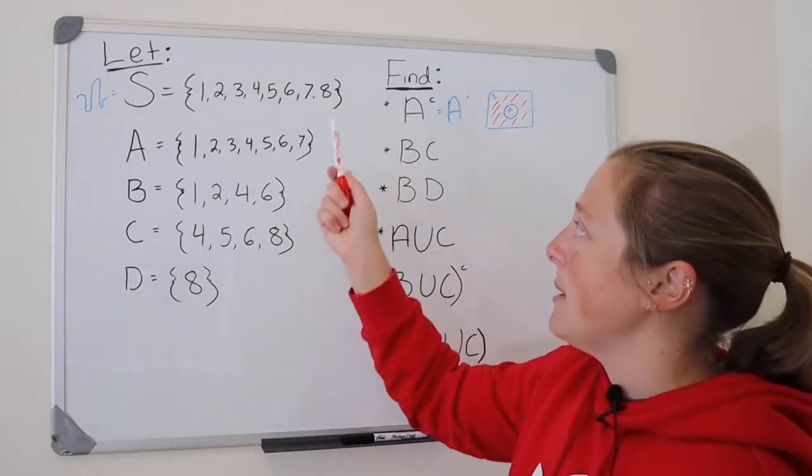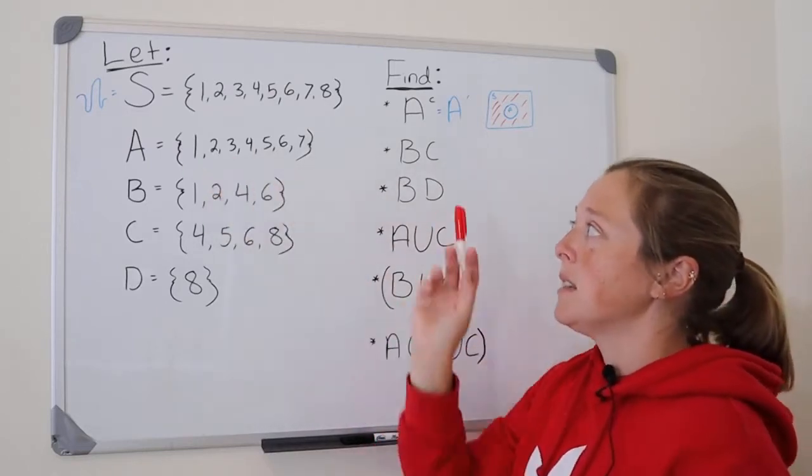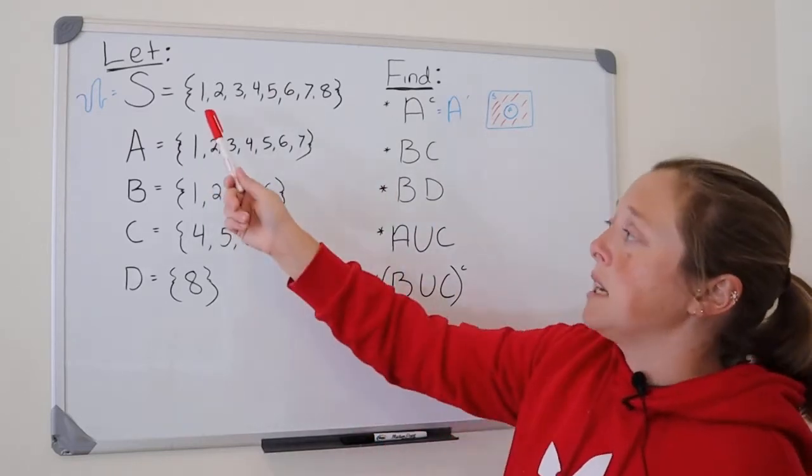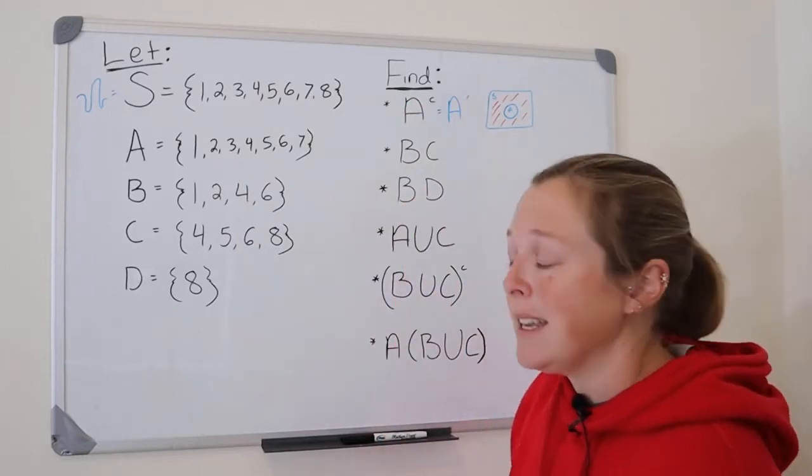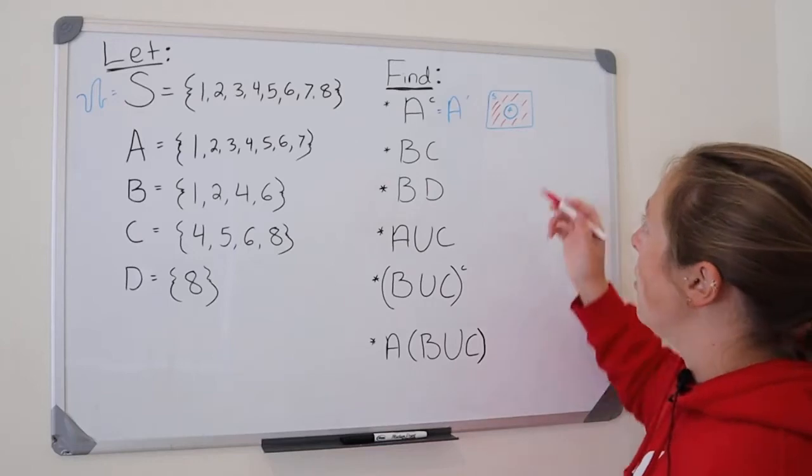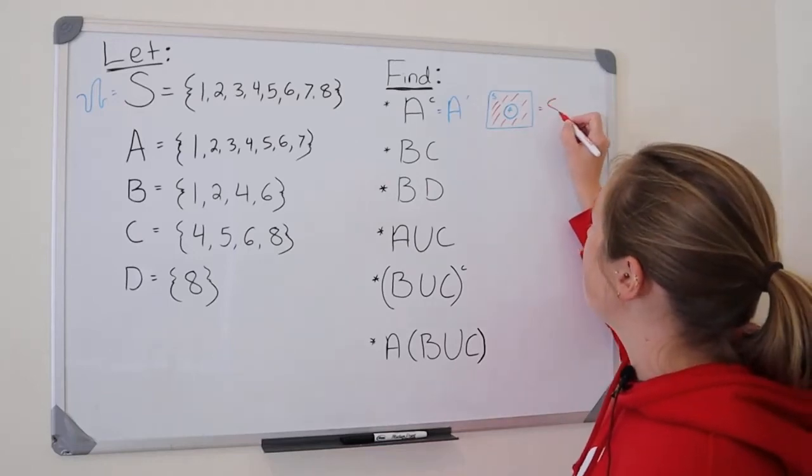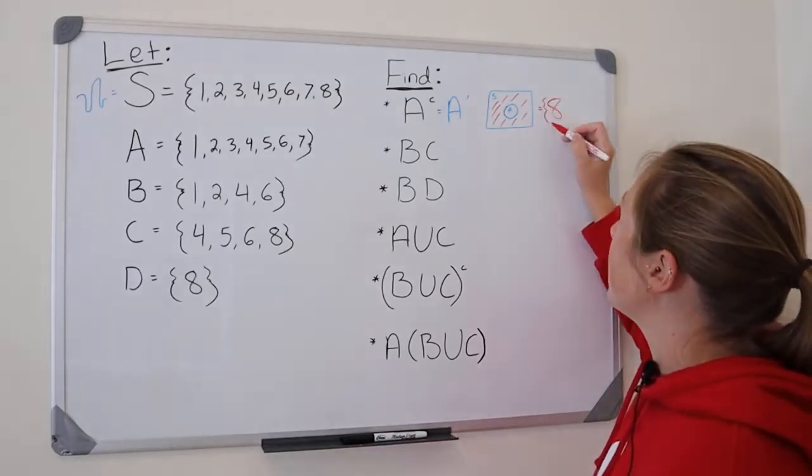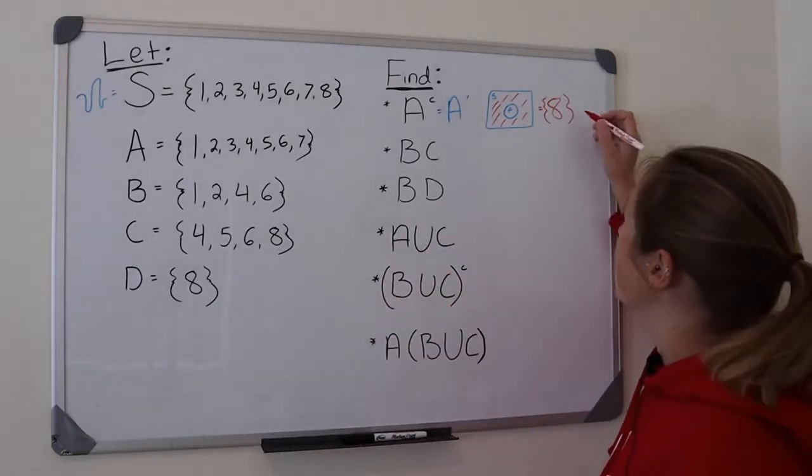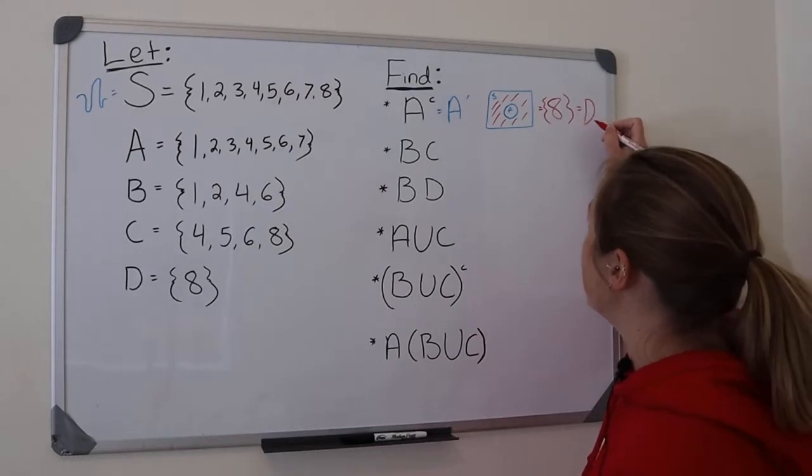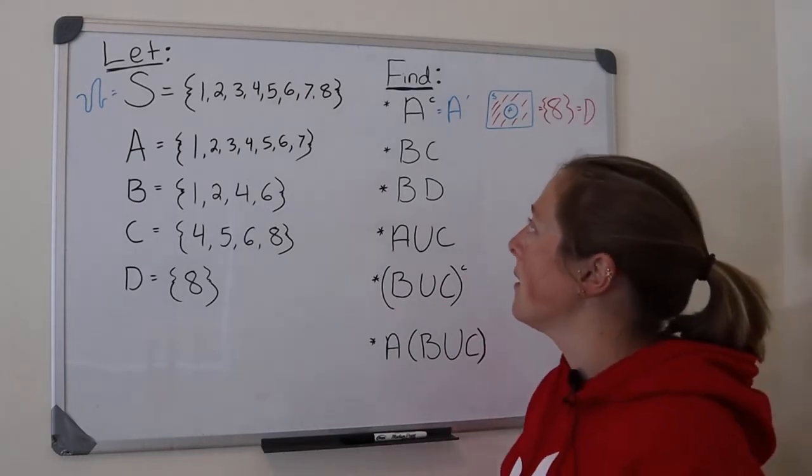So what is in the sample space but not in A? Well, since A contains the numbers one through seven, and the sample space contains the numbers one through eight, the one number that's missing is eight. So our complement is eight. This is what event D is. So you could have just written A complement equals event D.